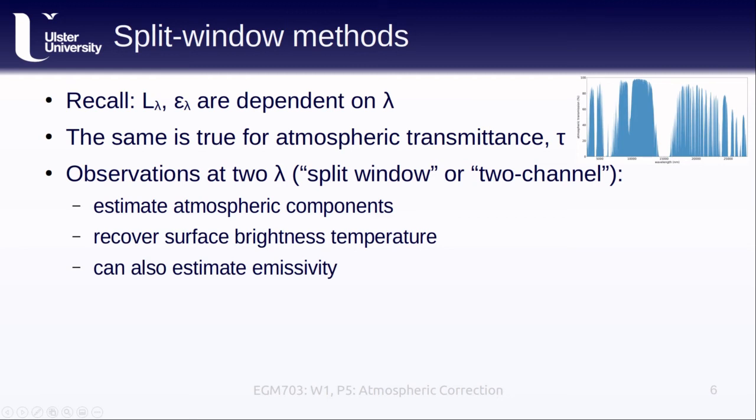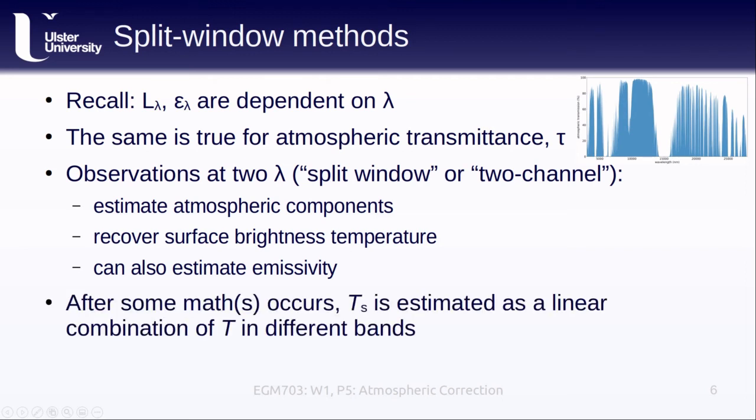In effect, what we're doing is setting up a linear system of equations to solve for the surface temperature. Starting from the radiative transfer equation, after we do quite a bit of math that we're not going to get into in this module, we end up with the result that the surface temperature, T sub s, is a linear combination of the brightness temperature in different bands. This is one of the reasons why sensors like Aster and AVHRR have multiple thermal channels to make estimating surface temperature corrected for the atmosphere that much easier. If you're interested in more of the details, there are articles that have been uploaded to Blackboard and the Zotero group library for this module that go into more detail about these methods.